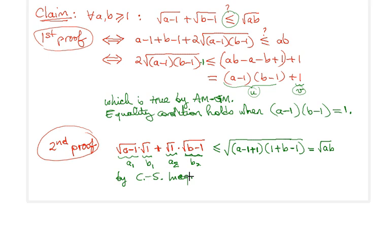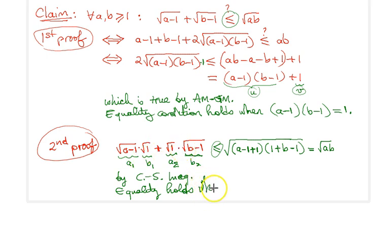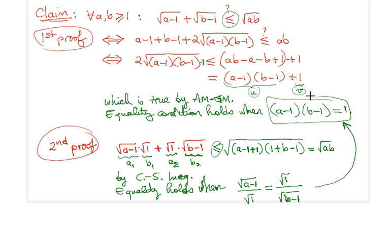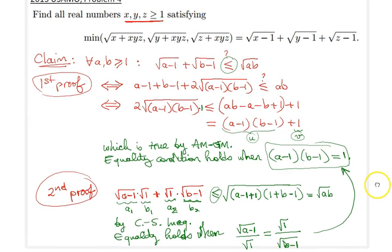That's a beautiful result. We should be careful about the equality condition under Cauchy-Schwarz — most people are ignorant of it. Equality holds when A1/A2 = B1/B2, or equivalently A1/A2 = B1/B2. That means √(a−1)/1 = 1/√(b−1), which by cross-multiplying gives back the same condition: (a−1)(b−1) = 1. This will be a crucial element in the solution.